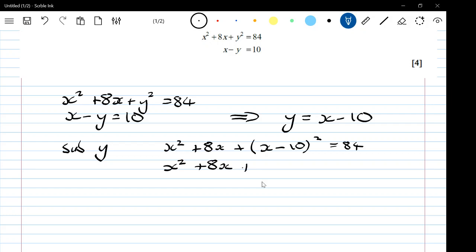So x squared minus 20x plus 100 equals 84, which gives us 2x squared minus 12x plus 16 equals 0. We've got a common factor of 2.